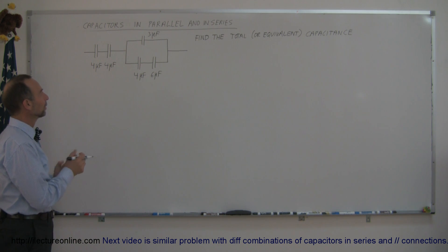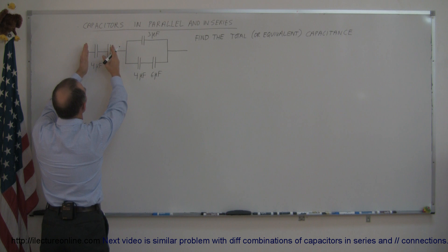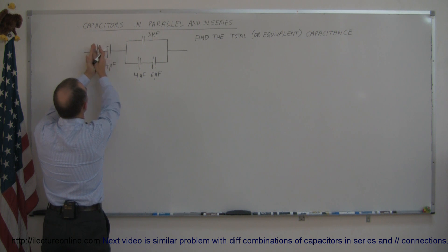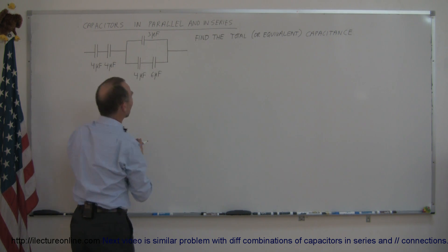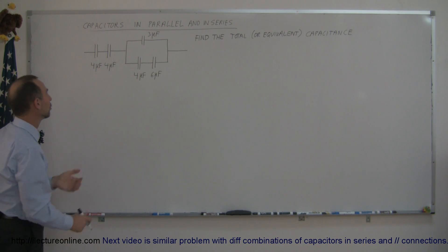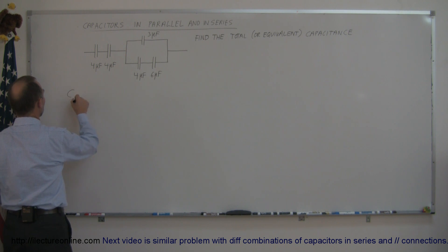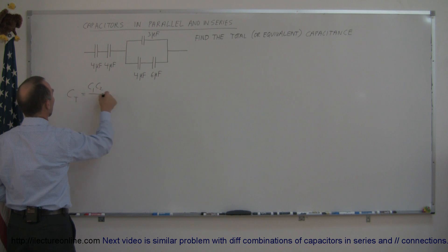Now where do you start? One way to start is to look at these two capacitors here and turn those into a single capacitor, and look at these two here and turn those into a single capacitor. Those are two sets of two capacitors in series, and the equation you use for two capacitors in series is the product over the sum: C1 times C2 over C1 plus C2.